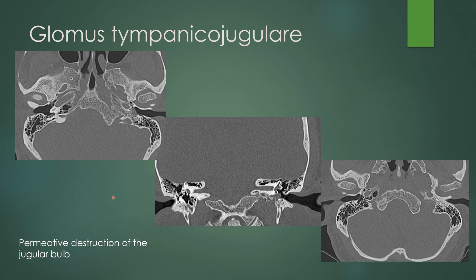You can have a glomus tympanicojugulare, which means it connects from the middle ear cavity down to the jugular bulb. You'll see what looks like glomus tympanicum with that soft tissue mass along the cochlear promontory, but then you see permeative bone destruction extending inferiorly to the level of the jugular bulb. You're losing that nice cortex around the jugular bulb — it has that moth-eaten appearance — with soft tissue extending down from the middle ear cavity and opacification of the air cells between the middle ear and the jugular bulb.